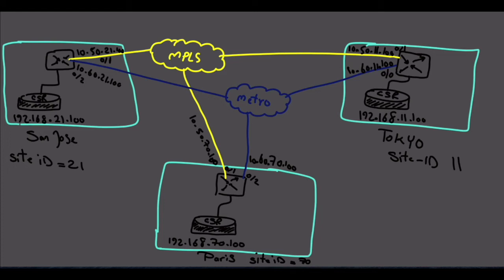In our topology we have three sites: Tokyo with site ID 11, Paris with site ID 70, and San Jose with site ID 21. In each site we have one bridge router connected to two transport clouds — MPLS and Metro — and behind each bridge router we have one CSR with a loopback IP address.